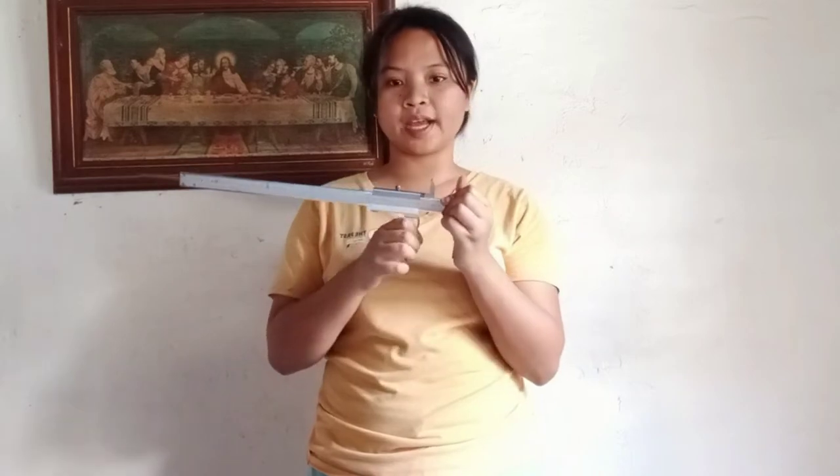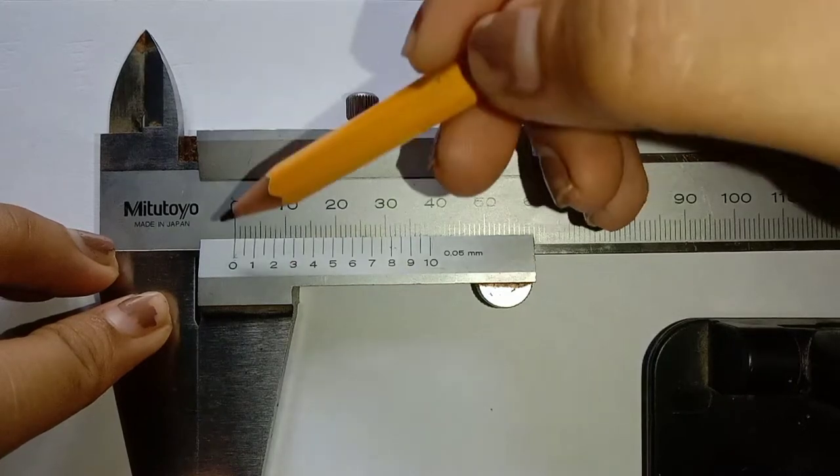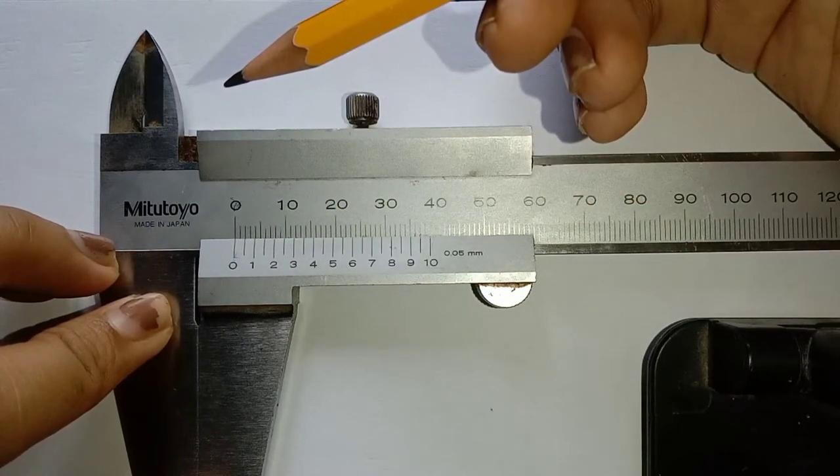First, we are going to talk about the caliper or the vernier caliper. This is the caliper. The zero in the vernier scale is right at the zero in the main scale. Then, here the measurement I have is 0 mm.